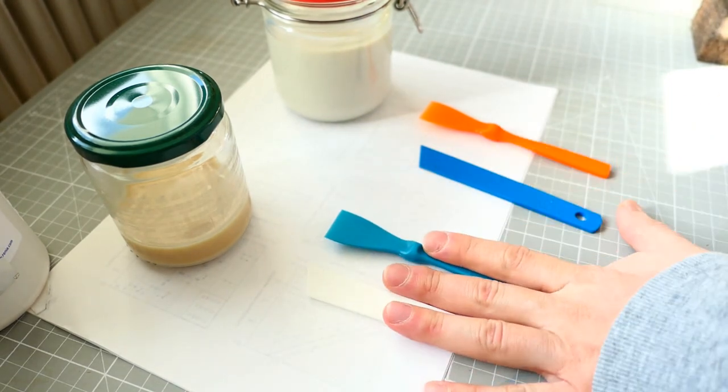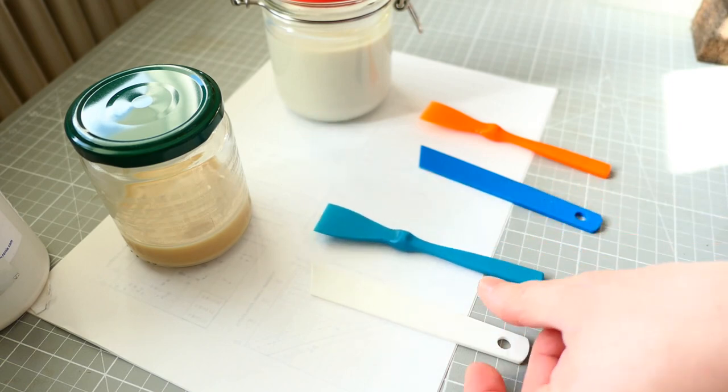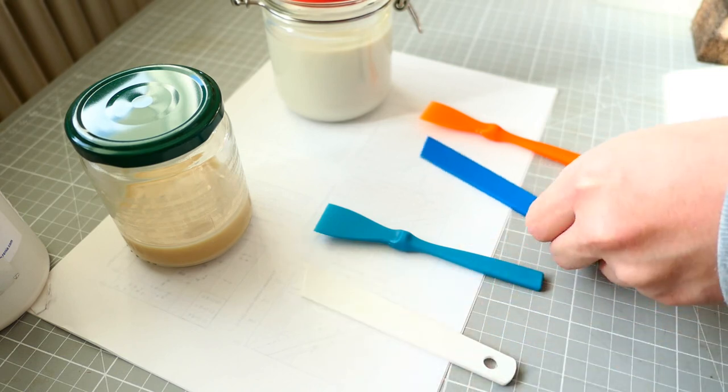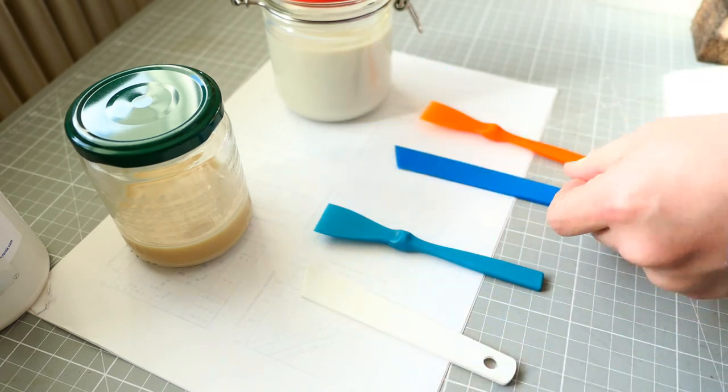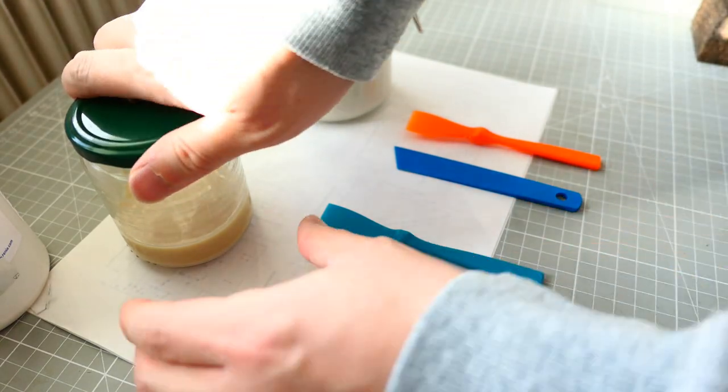So on this side I have greenish blue color Amirok spatula and also white Japanese one. And on here I have a blue Japanese one and the orange color Amirok spatula.